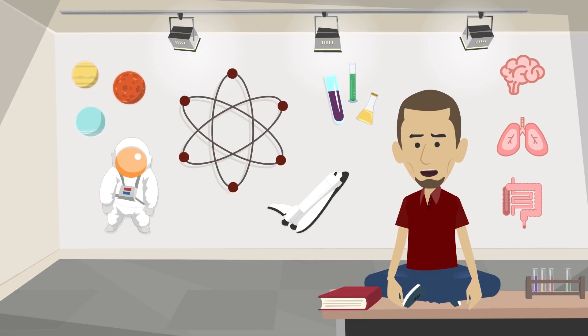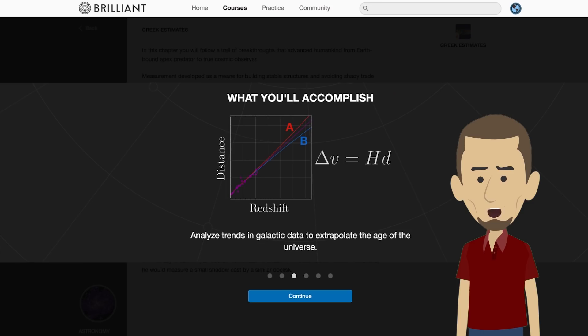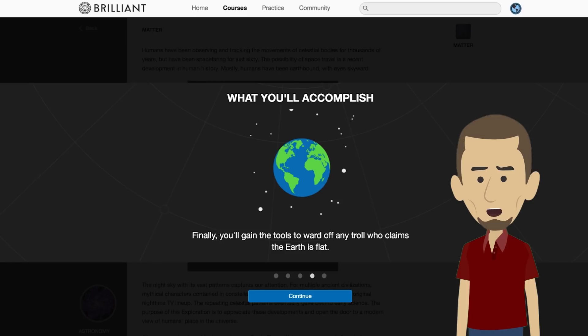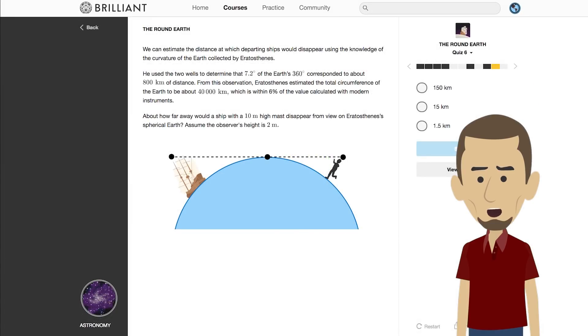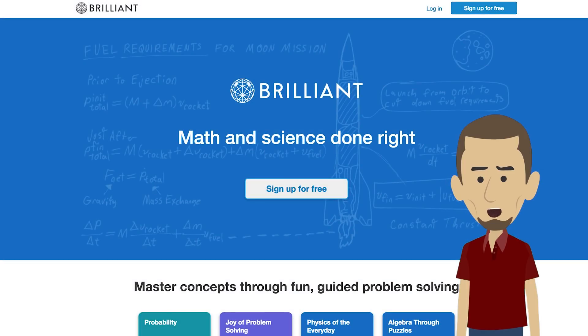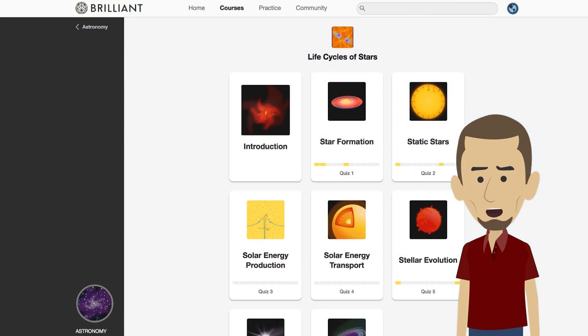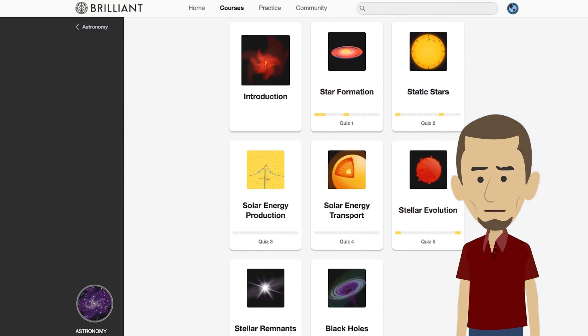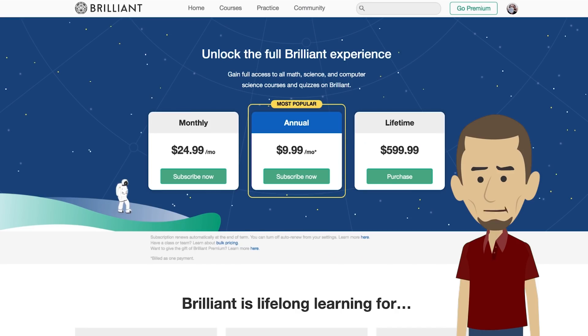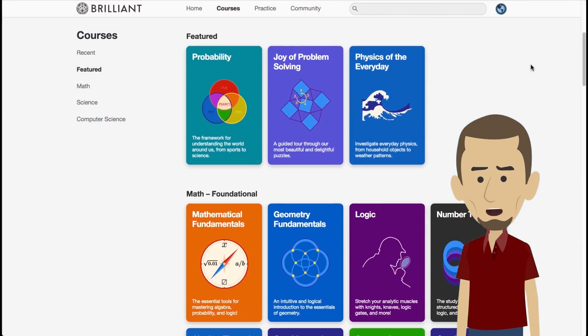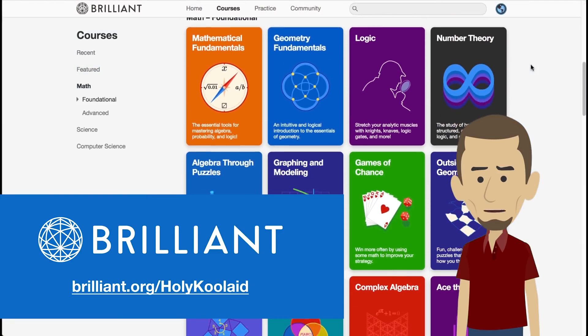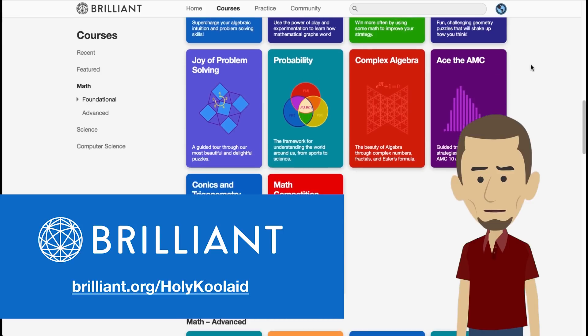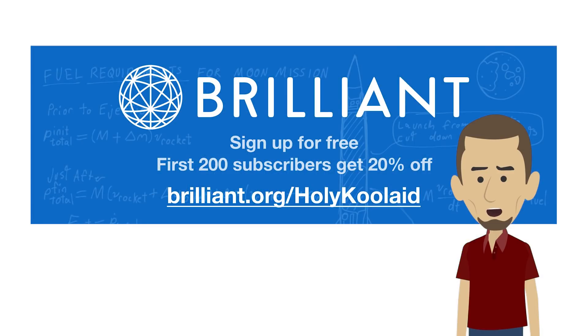Want to prove to a young Earth-creationist that the Earth isn't 6,000 years old? They've got you covered. Are flat-earthers driving you nuts? Why not calculate the circumference of the Earth? You can sign up for free to try out their basic courses, but if you're really serious about taking your science education to the next level, I recommend that you go premium and get full access to their entire library of courses. Go to Brilliant.org to sign up today, and as a special thank you to all my viewers, the first 200 of you who sign up will get 20% off an annual membership.